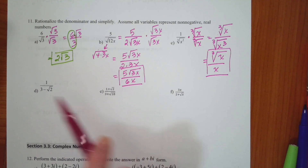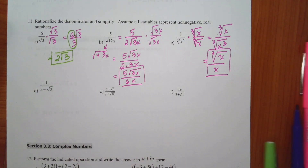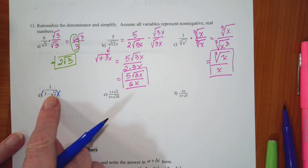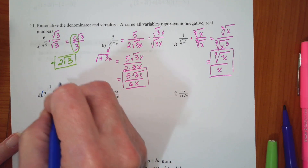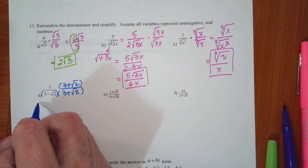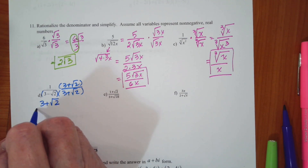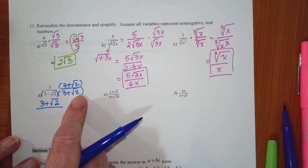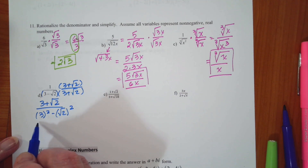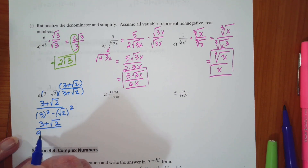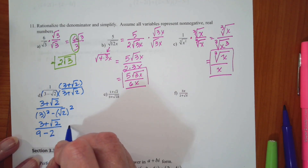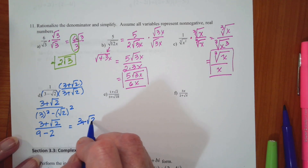If I want to rationalize the denominator and I have an expression, I want to multiply by the conjugate. So I have to do numerator and denominator, and the conjugate is the same expression with the sign changed — so this would be 3 plus root 2. This is a difference of perfect squares, so this becomes 3 squared minus the square root of 2 squared, giving us 3 plus the square root of 2 over 9 minus 2, which becomes 3 plus the square root of 2 over 7.